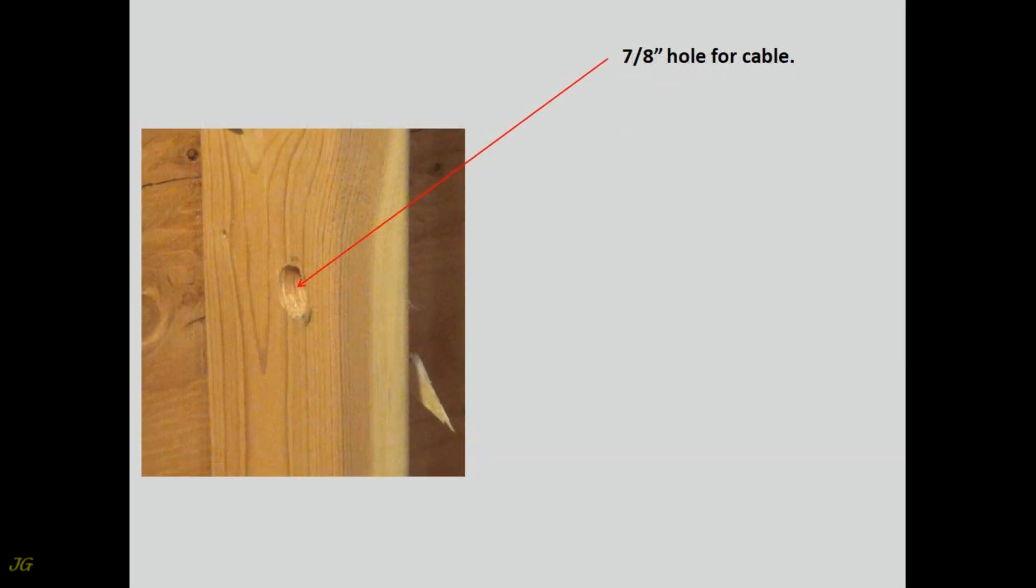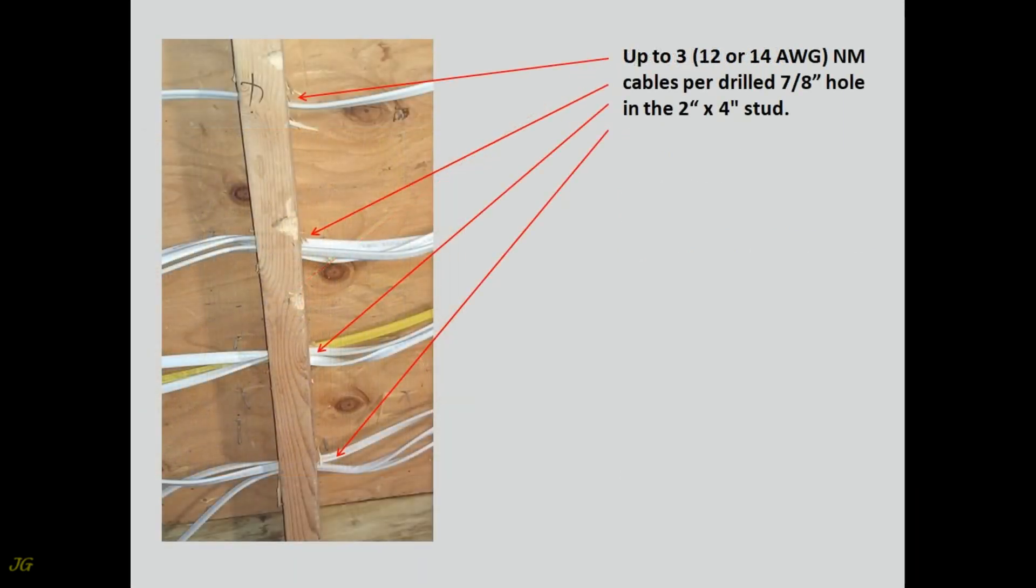7/8 hole for cable. Up to 3, 12 or 14 gauge, NM cables per drilled 7/8 inch hole in the 2 by 4 inch stud.